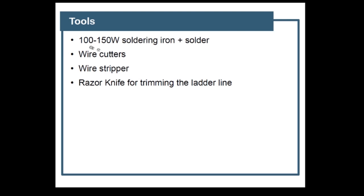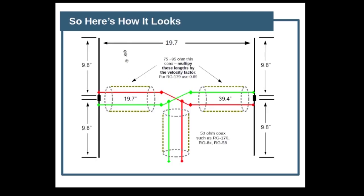For tools we need a soldering iron and solder, wire cutters, wire stripper, and a razor knife for trimming the ladder line. Here's how it's going to look: 19.7 and 13.4 inches are the feed lines shortened by the velocity factor. The 50 ohm connects to it, and the antenna stubs - the eighth wave antenna dipoles are right here, 180 degrees out of phase. We're separating them by a quarter wavelength, keeping them 19.7 inches apart.